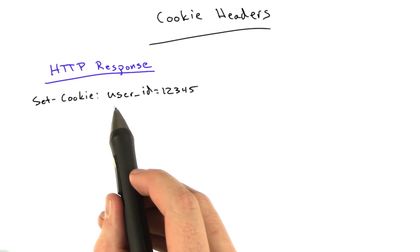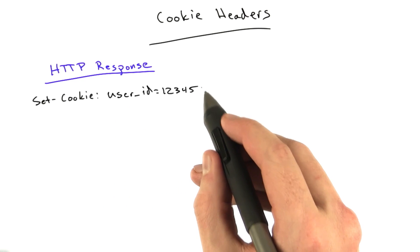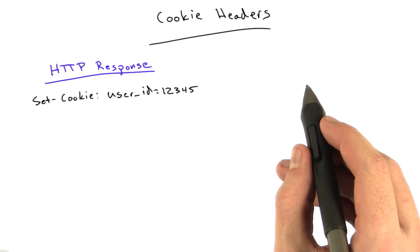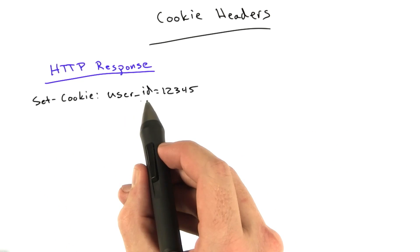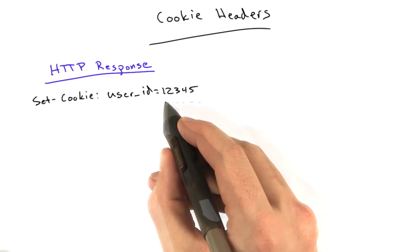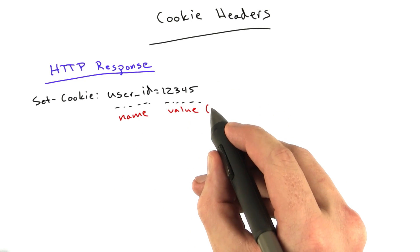And in this particular case, you say name equals value. There are some other parameters you can have on the cookie that we'll discuss later. But basically, they use the set-cookie header to set cookie named user ID to this value. And remember, this is the value, and this is the name. And the value can be up to 4K.